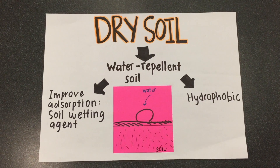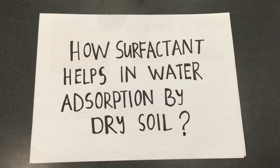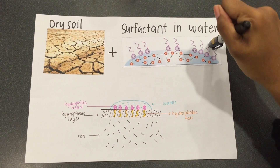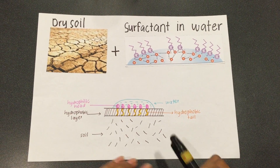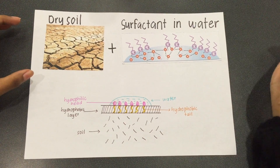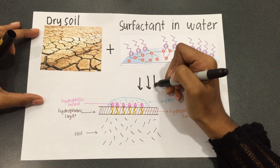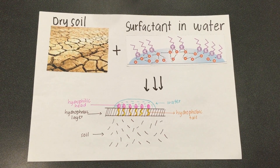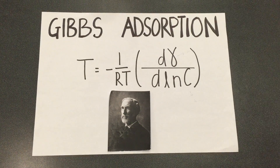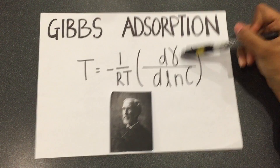Surfactant, acting as a soil wetting agent, is used to improve adsorption. How does surfactant help in water absorption by dry soil? When surfactant in water is added to dry soil, the hydrophobic tail of the surfactant will be attracted to the hydrophobic surface of the soil, so the dry soil will be able to absorb water. This increases the rate of movement of water into the soil. The relation linked to surfactant is Gibbs' adsorption equation, which measures the amount of surfactant absorbed per unit area from surface tension calculations.